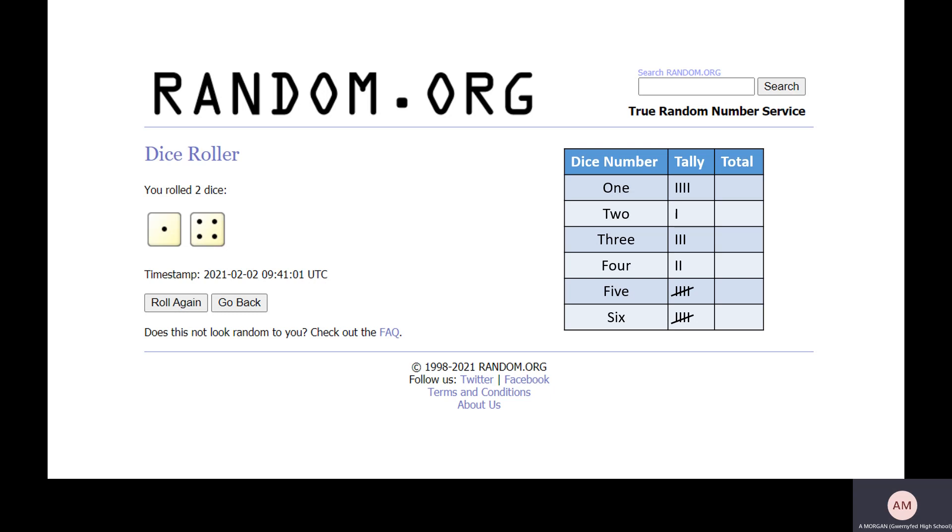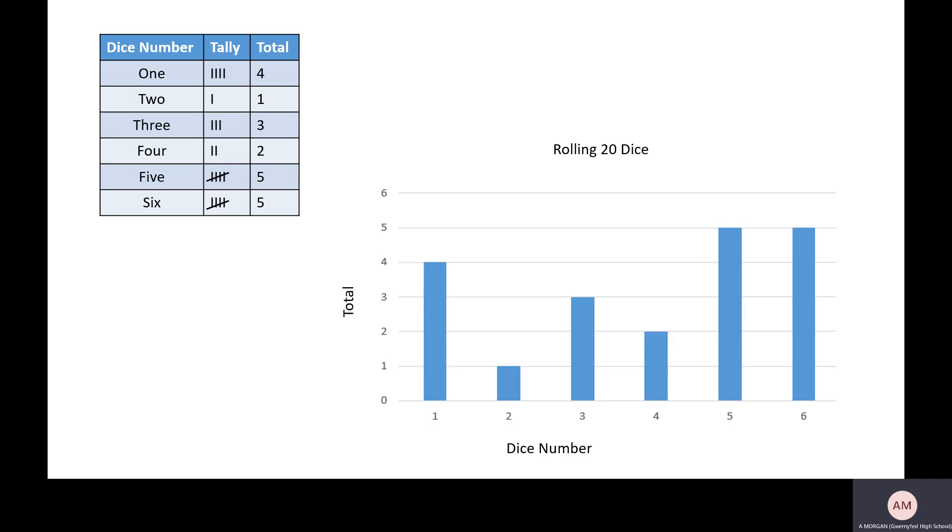And the last time we're going to roll it for this time, I've got a one and a four. So there we go. I've rolled it 20 times and I've got a bunch of results. I've got every number at least once. Let's add them up for the totals. I've got one four times, I've got two once, I've got three three times, I've got four twice, I've got five five times, and I've got six five times.